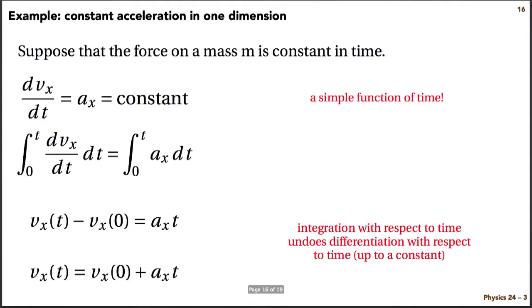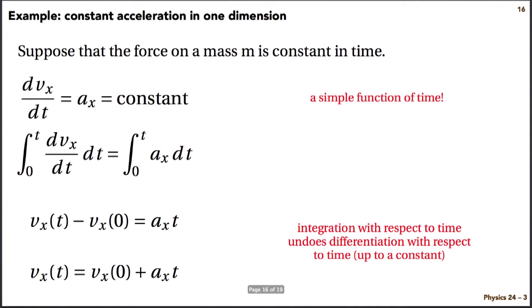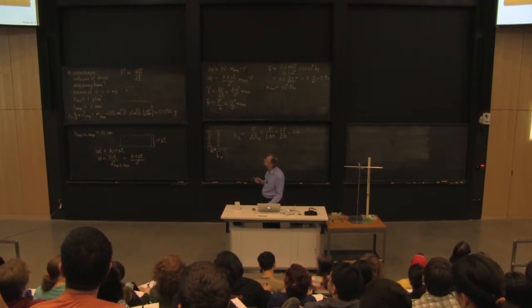So suppose that I had a force on a mass that is a constant. And this is the example that everybody has done in high school. So we have a uniform force such as might be provided by gravity. Then since the acceleration is the derivative of the velocity with respect to time, integration undoes the differentiation. So I can integrate over the same time interval. And I get the change in the velocity between time t and time 0 is equal to the acceleration times the time since the acceleration is a constant. The integral of dt is just t. That wasn't supposed to happen. I hit the laser button, stupid thing.